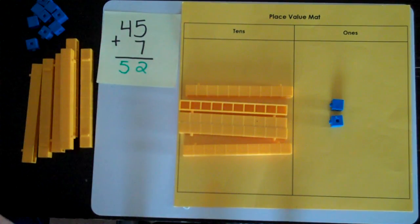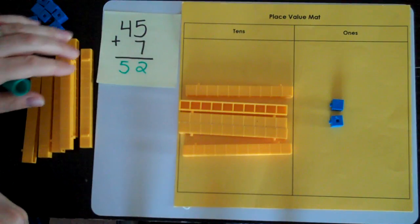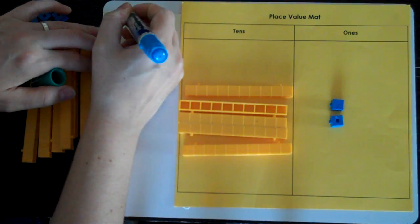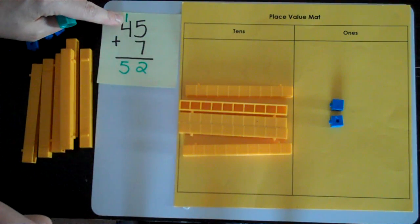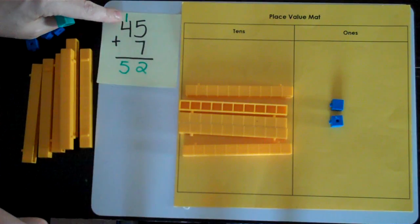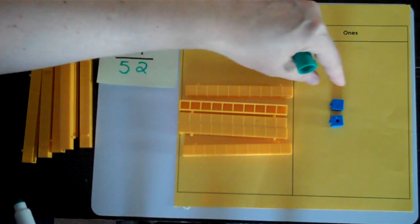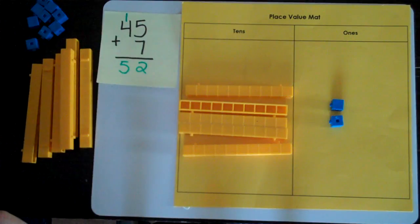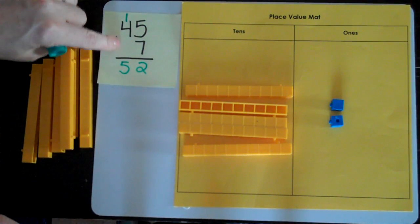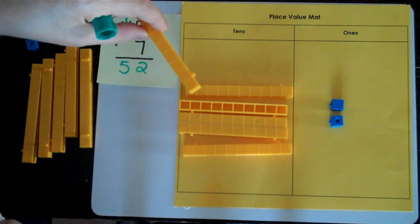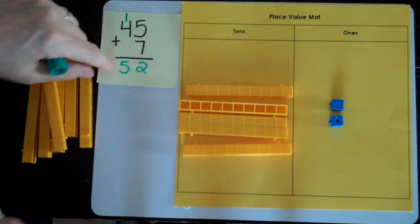I had to trade and we often show that by putting the traded one, the ten that we made in the tens place. So we show that we had to add a ten after trading off the ones. We can represent that with a one in the tens place to show that we had one ten that we did. My answer is 52.